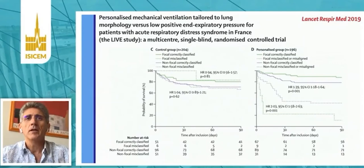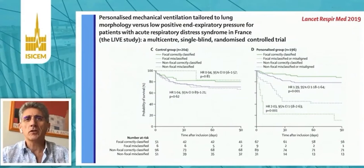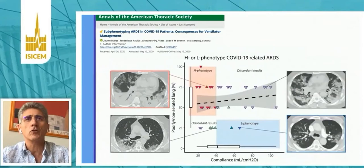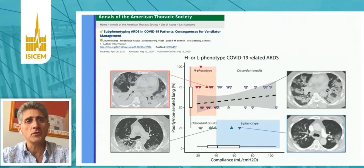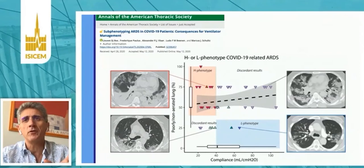This actually points out the fact that the CT scan may sometimes be misleading, and this is also true in patients with COVID-19 infection. A very interesting letter from Marcus Schultz's group in the Netherlands has clearly shown that some patients have this H phenotype and indeed very low compliance, totally consistent with the CT scan findings. Whereas some of these patients will still have low compliance and rather focal lung lesions on the CT scan — they are called discordant CT scan phenotypes. The same is true for patients with the L phenotype, where there is not a perfect correlation between compliance and CT scan findings.